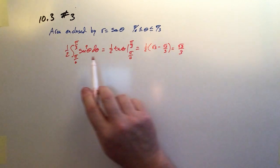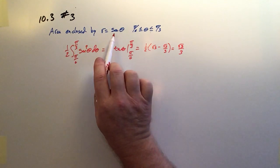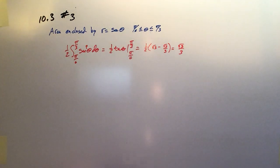So that would be the area enclosed by r equals secant theta between pi over 6 and pi over 3.